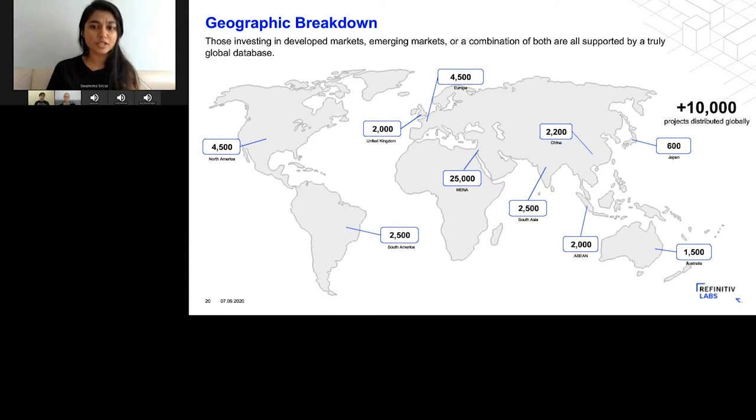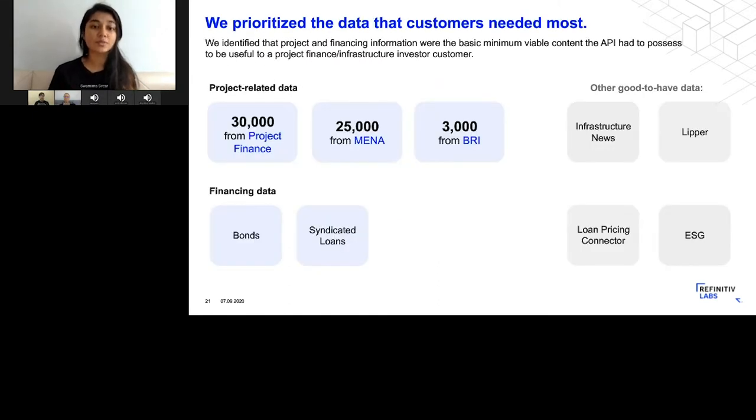Since all of those databases existed in disparate sources, we tried to prioritize which ones to link first. After conversations with customers and internal subject matter experts, we found out that the priority was really to link the project-related data with financing data, because that's where the biggest gaps really are. With news, you're able to piece that together by doing due diligence, but sometimes it's really obscure to understand your exposure to certain kinds of monetary, financial, or project-related risks.